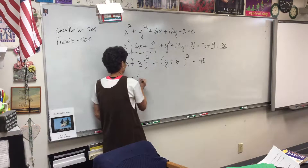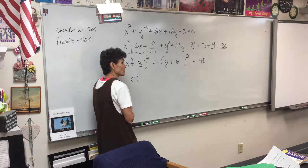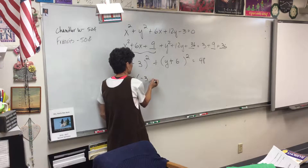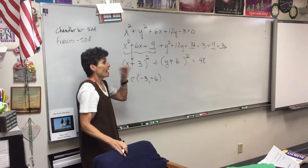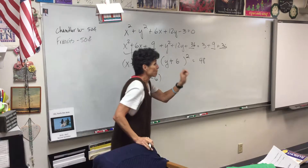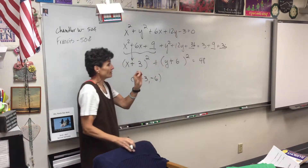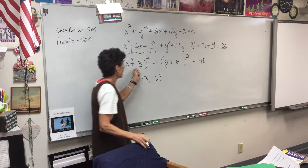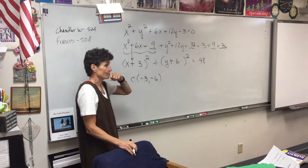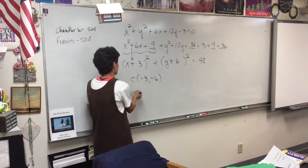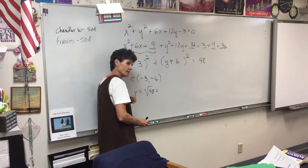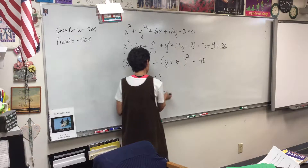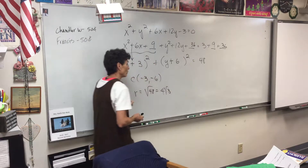When I do a circle, I need the center and the radius. The center is at negative 3, negative 6 — it is the opposite of what's in the parentheses. And that's true for every shape: parabola, ellipse, hyperbola. It's the opposite of what you've got in there. Your radius is the square root of 48, which is 4 root 3 — that's 16 times 3.